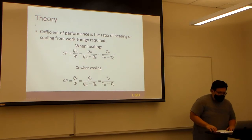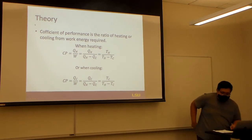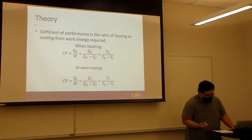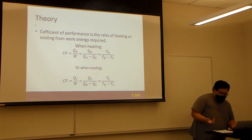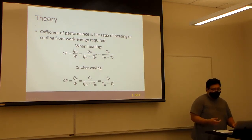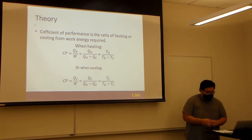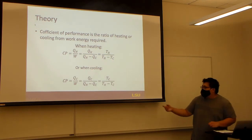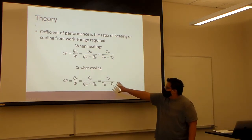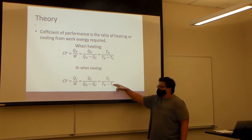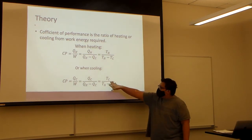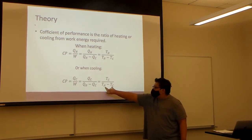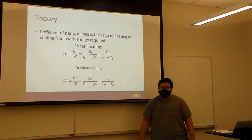The coefficient of performance is basically the ratio of heating or cooling from the work energy required. For this report, we're using the cooling part of it in terms of temperature. We have the cold temperature at the top and then the temperature difference of the hot and the cold.